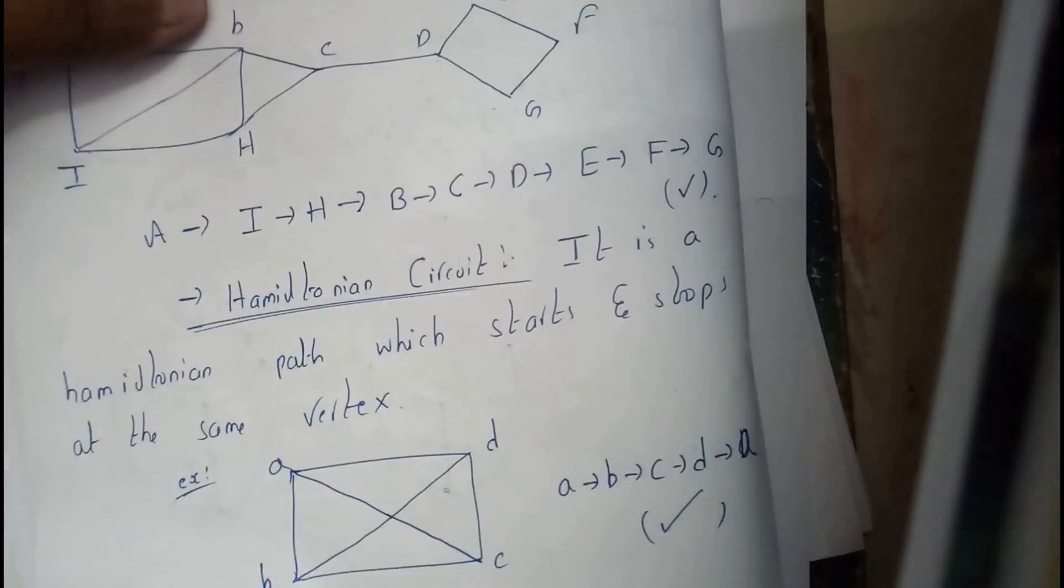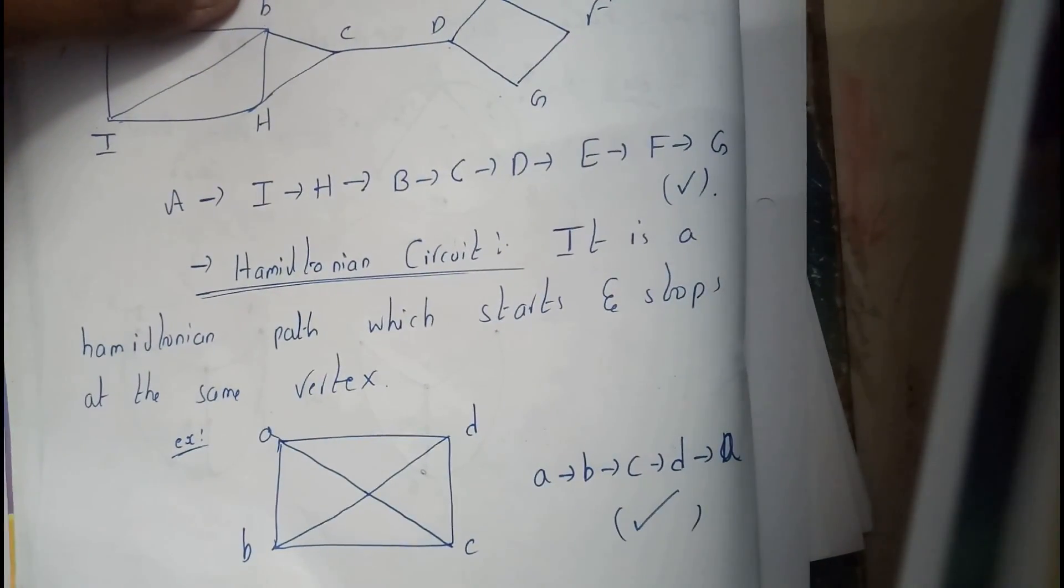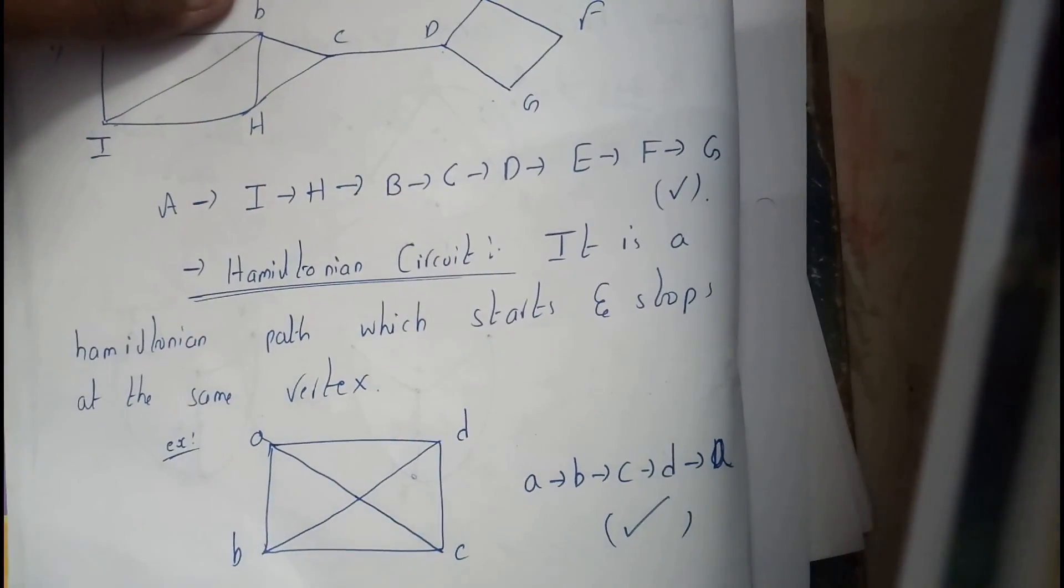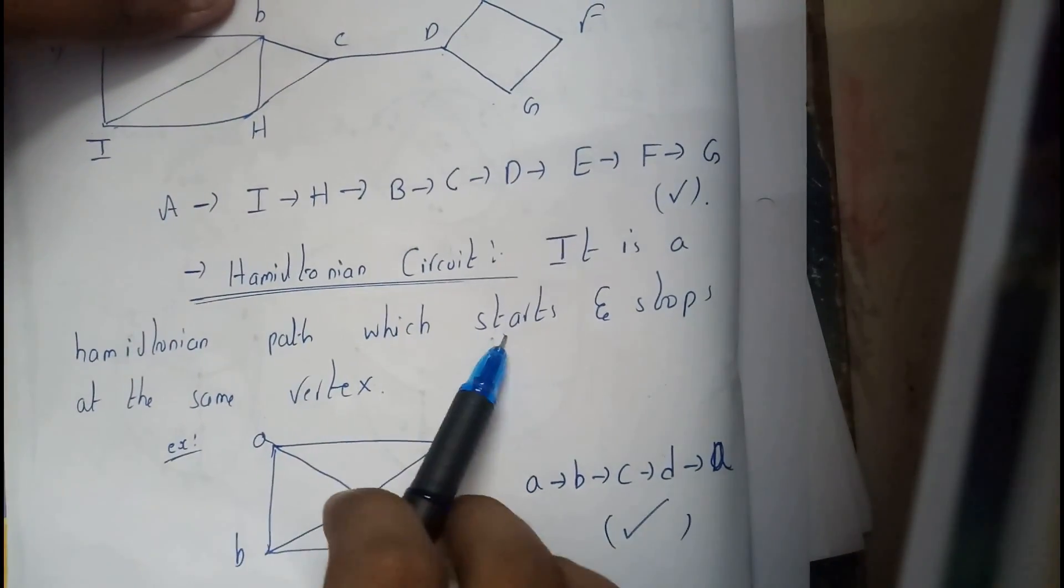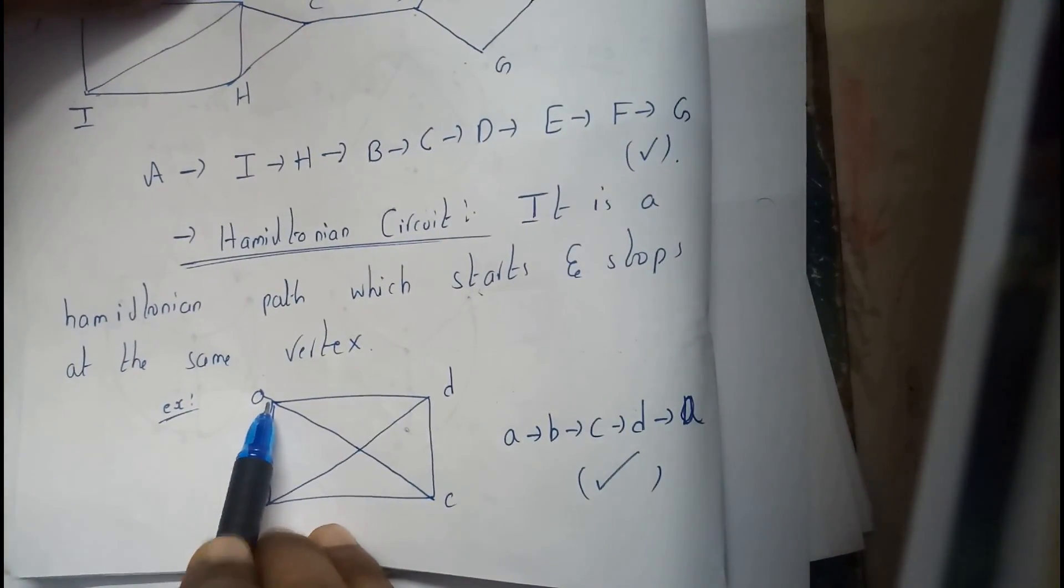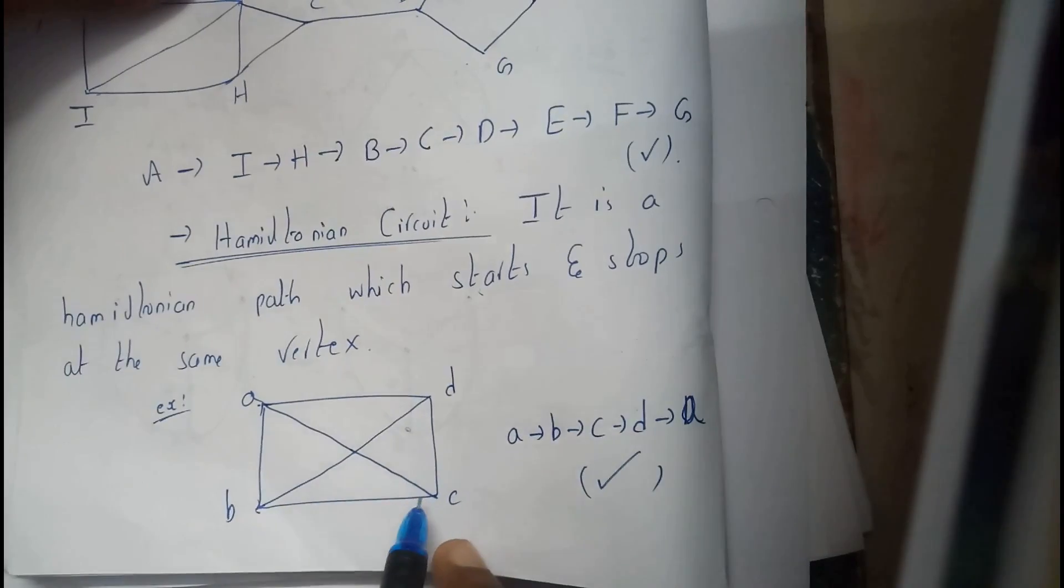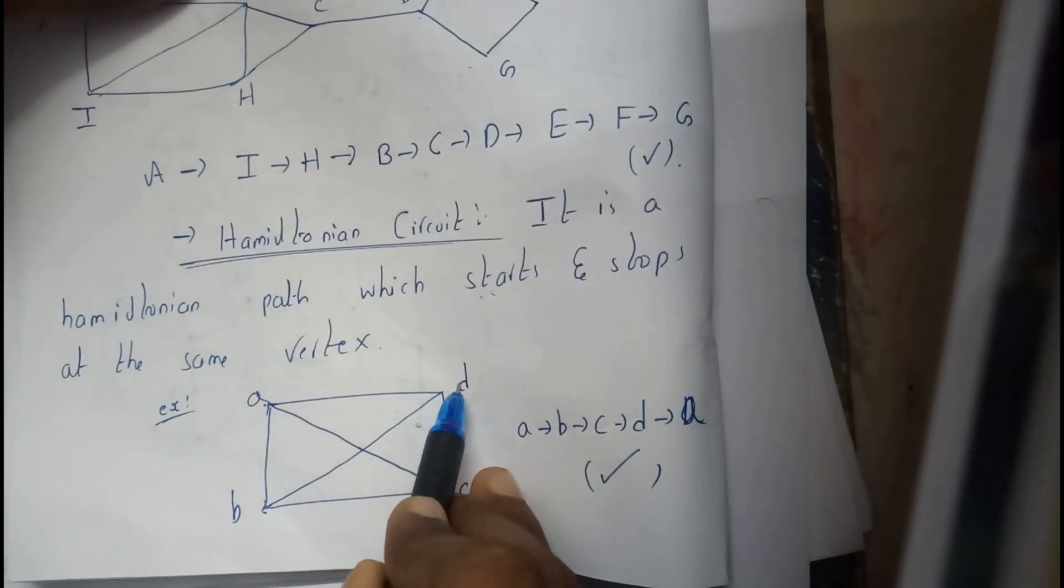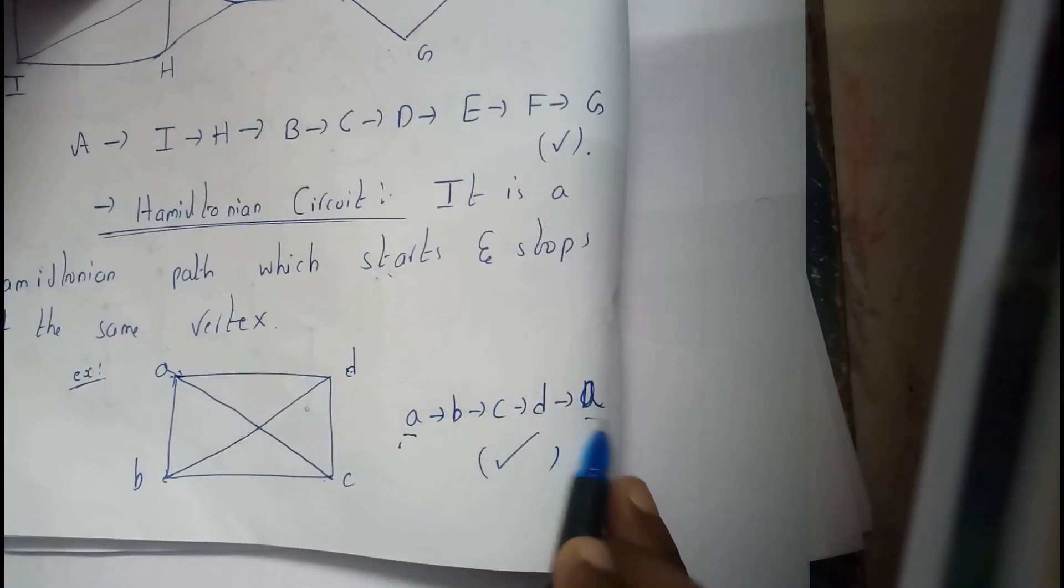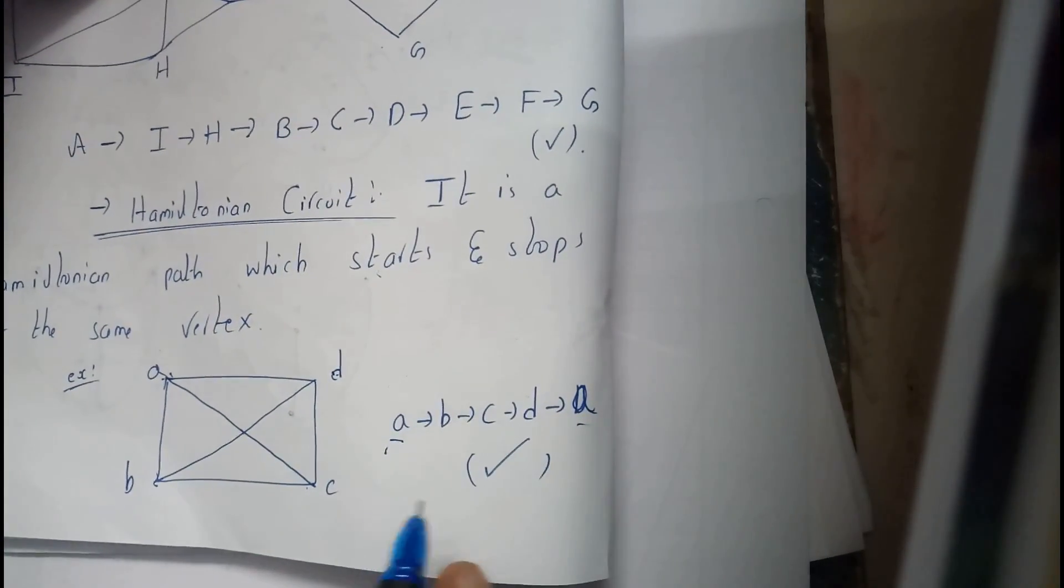Now we will be going through Hamiltonian circuit. It is nothing but a Hamiltonian path where starting and the ending points are same. Here, A to B, B to C, C to D, D to A. The initial and the final positions are same. So hence, it is a Hamiltonian circuit.